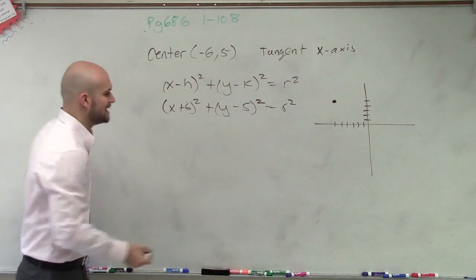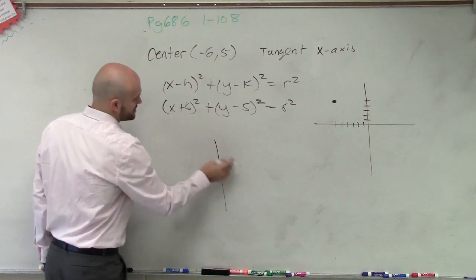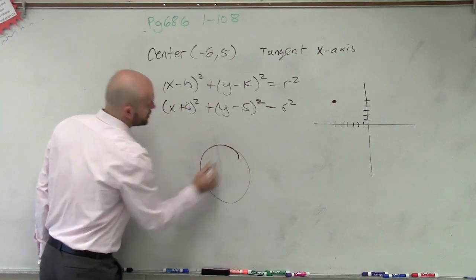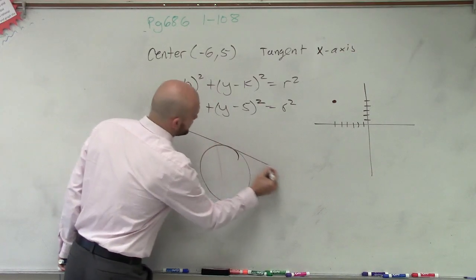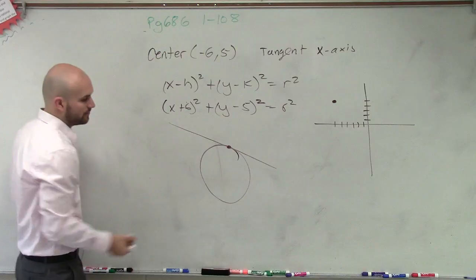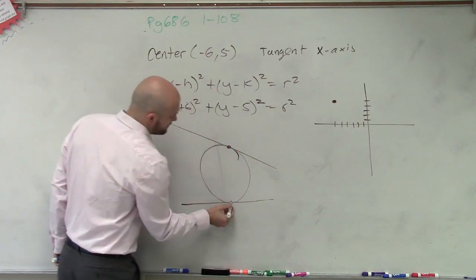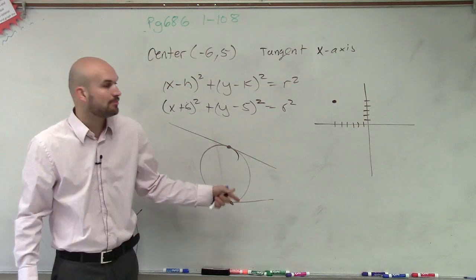Now remember, when we talked about a line that's tangent to a circle - I don't know why I'm drawing a line - but if you draw a circle, a line tangent to it is going to intersect at exactly one point. You can draw infinitely many tangent lines that only intersect at exactly one point.